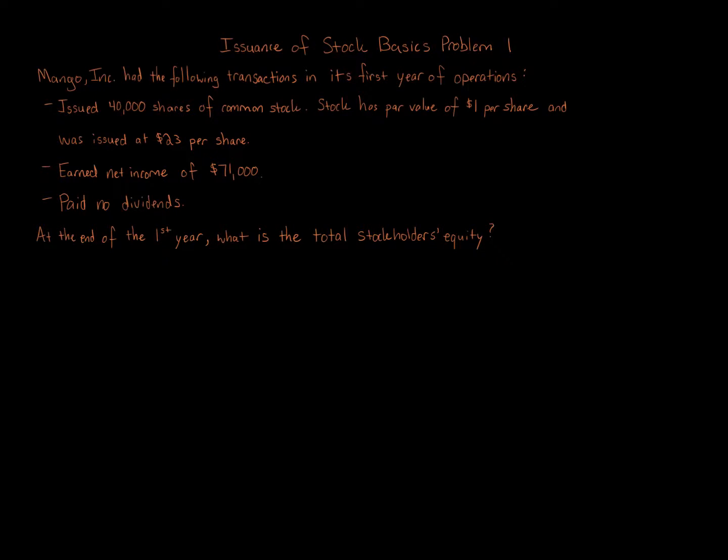Issuance of Stock Basics Problem 1. Mango Inc. had the following transactions in its first year of operations: issued 40,000 shares of common stock with par value of $1 per share at $23 per share, earned net income of $71,000, and paid no dividends. At the end of the first year, what is the total stockholders' equity?